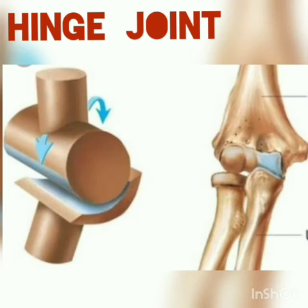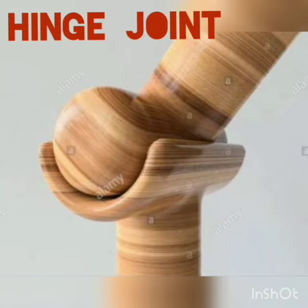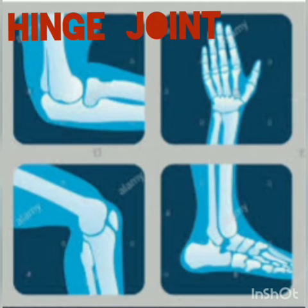First, we will discuss the hinge joint. We can bend our fingers, arms, legs, and lower jaw only in one direction — forward and backward. It is like the joint of a door. This type of joint is called a hinge joint, and it allows bones to move only in one direction.